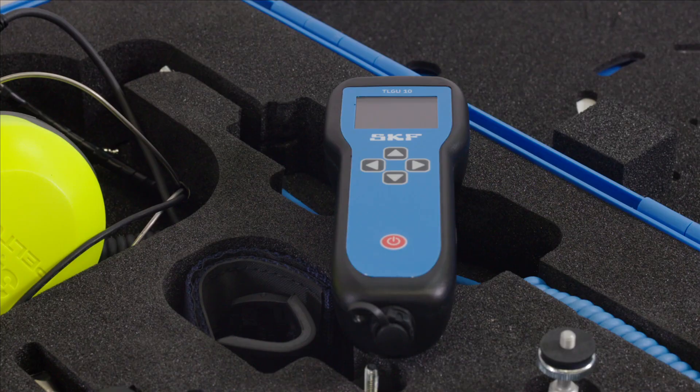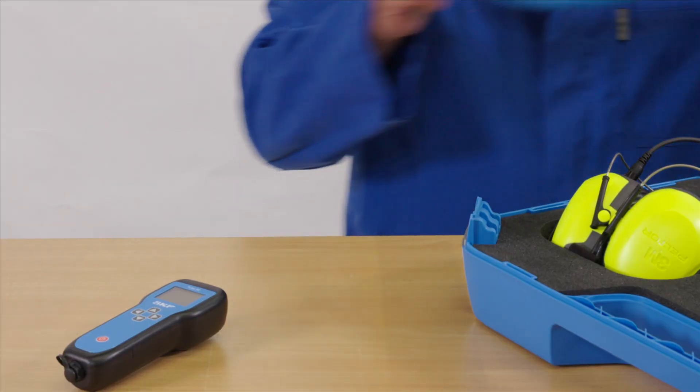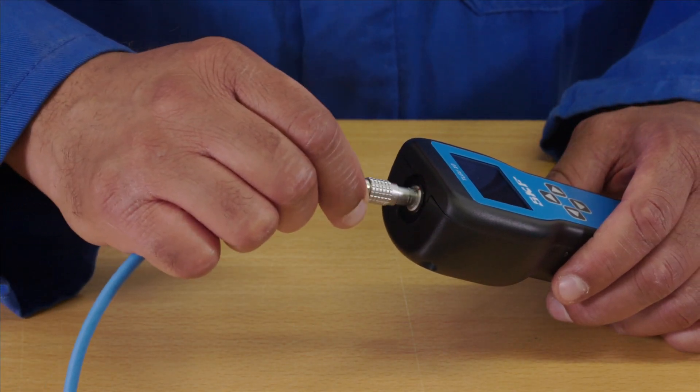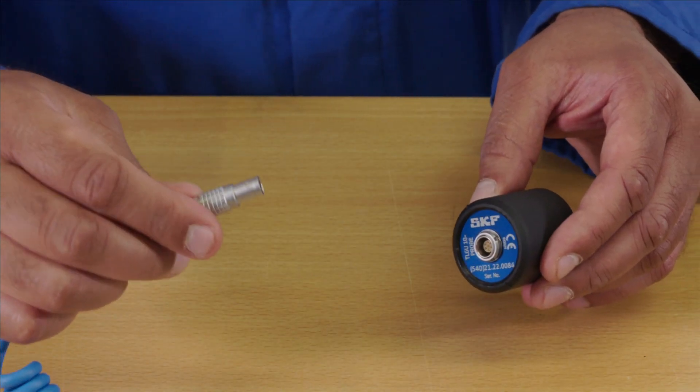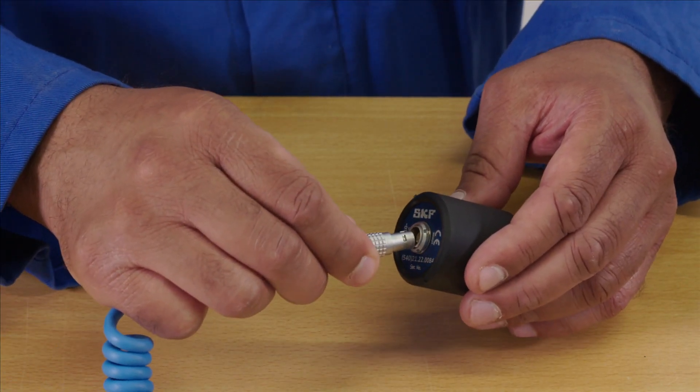The unit can be battery or USB powered. Start by connecting the sensor cable to the handset. Next, connect the ultrasonic sensor.